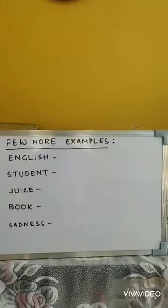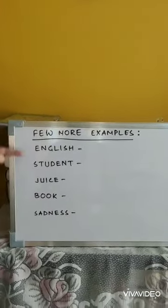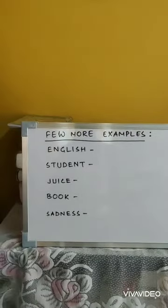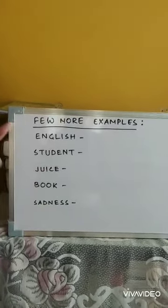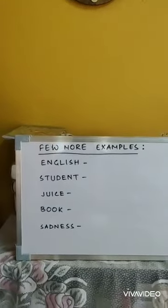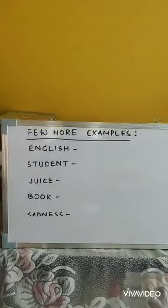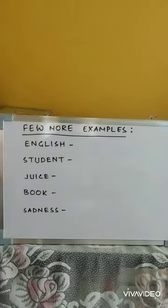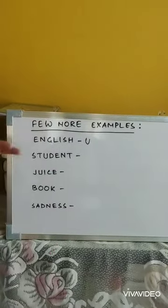Here five words are written. I want you to quickly revise with me and tell me which words are countable and which are uncountable. We will write U for uncountable and C for countable beside each word. English — can we count English? English is a language, so we cannot count it. English is uncountable.